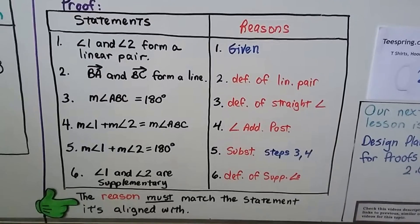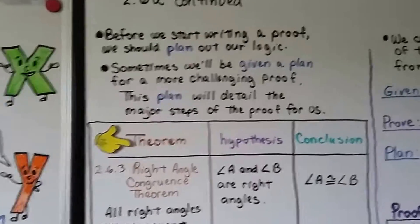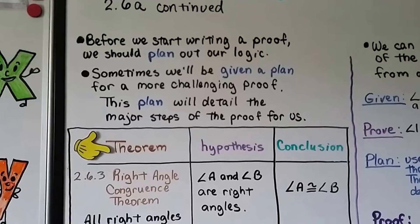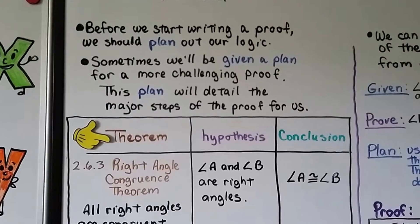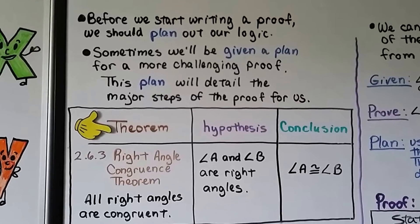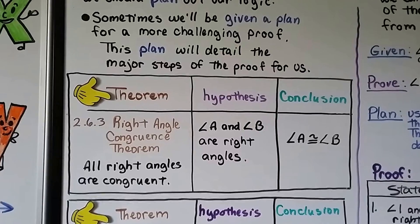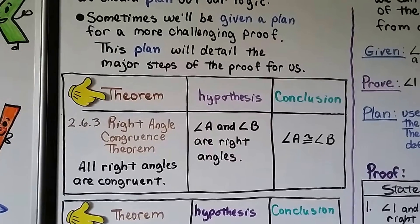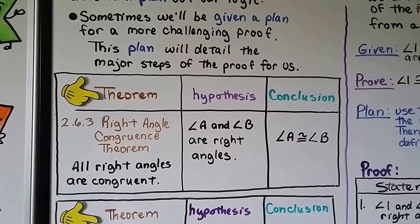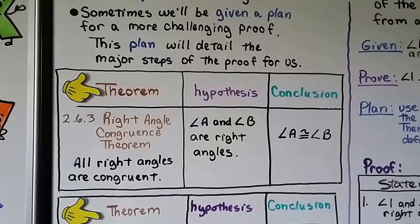Before we start writing a proof, we should plan out our logic. Sometimes we'll be given a plan for a more challenging proof, and this plan will detail the major steps for us. Here we have another theorem — Theorem 2.6.3, the Right Angle Congruence Theorem. It says all right angles are congruent. The hypothesis is angle A and angle B are right angles, so the conclusion is that angle A is congruent to angle B.